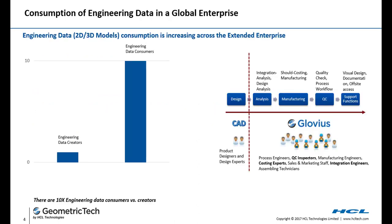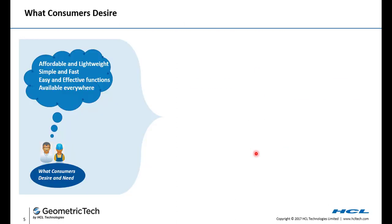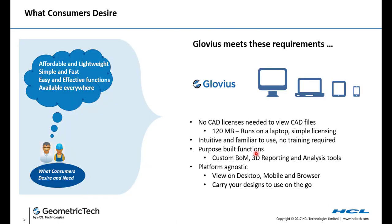As the consumption of 3D data in global enterprises keeps increasing, especially among the downstream users, we need specific tools that cater to their specific and custom workflows. That's exactly where Glovius fits in to address the use cases of process engineers, QC inspectors, and so on. What these users desire is an affordable and lightweight tool that is simple and fast to learn, offering easy and effective functions for tailor-made use cases, available everywhere.